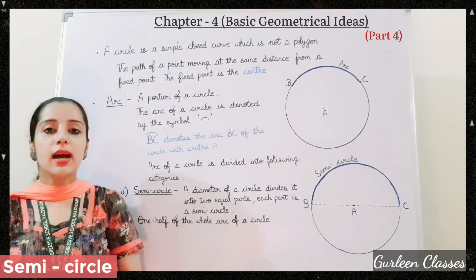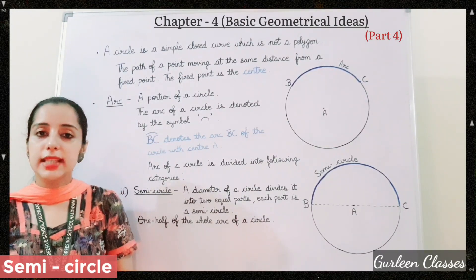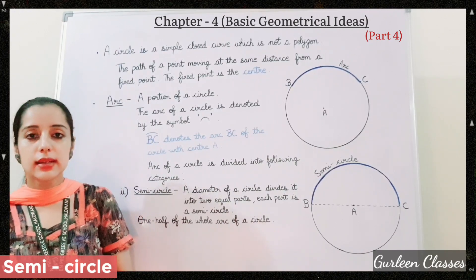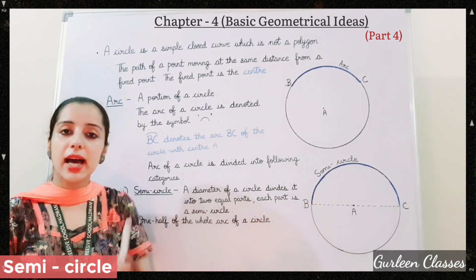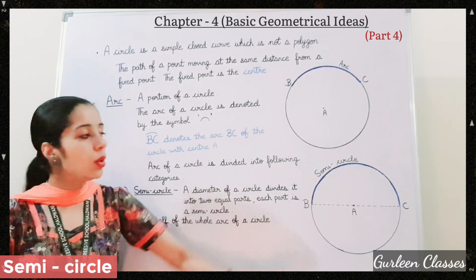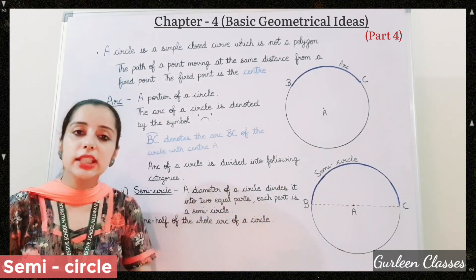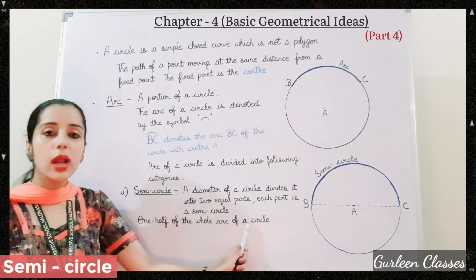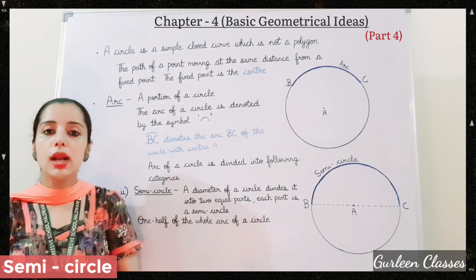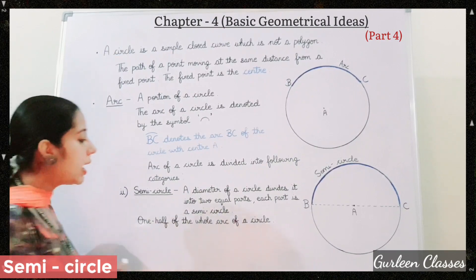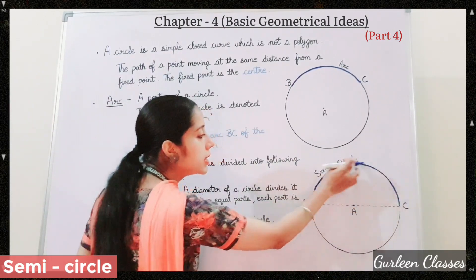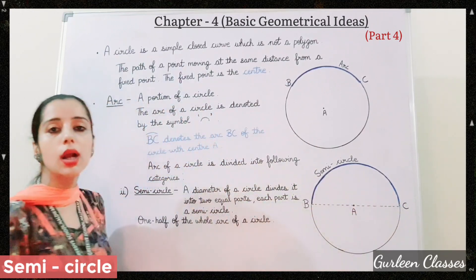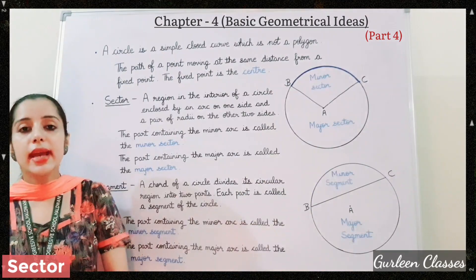Number 2: Semicircle. A diameter of a circle divides it into two equal parts — each part is a semicircle. Here, BC is a diameter; it divides the circle into two equal parts, and each part is a semicircle. One half of the whole arc of a circle is also called a semicircle.